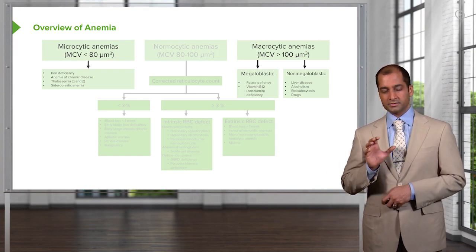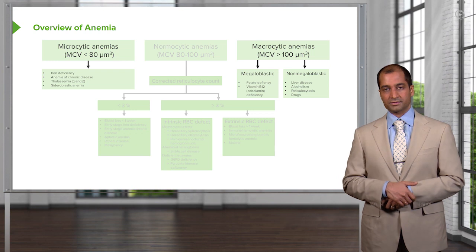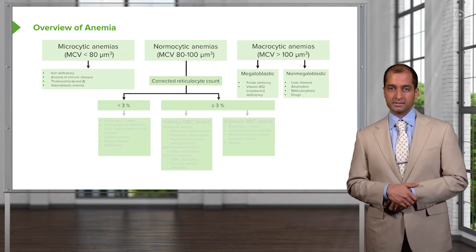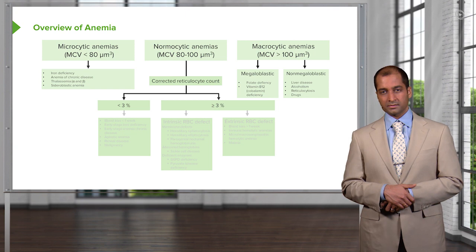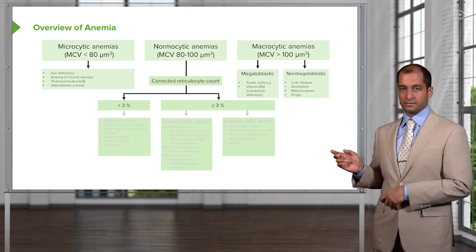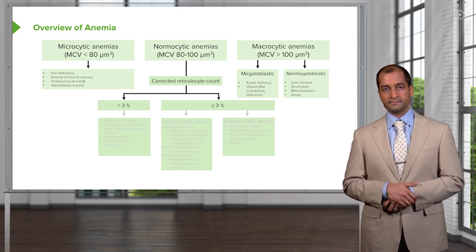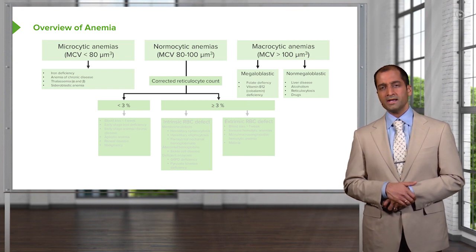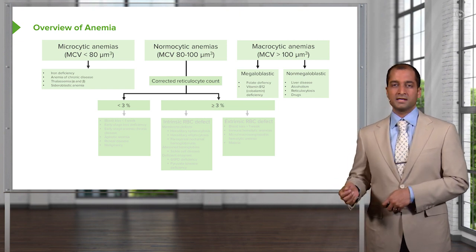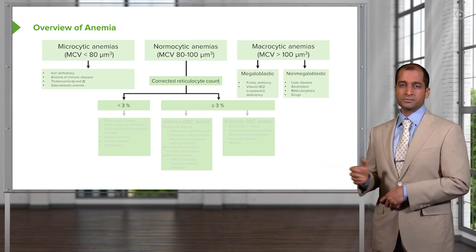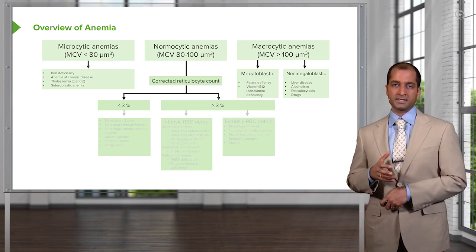All we're doing here is setting up an overview, organizing the arms and branches of anemias. Under normocytic, these are going to be the largest category of all the anemias. Just because you find an MCV between 80 and 100, all it does is place you in the normocytic category — your patient will present with fatigue and tiredness, and then you'll take a proper history to figure it out. Normocytic is divided into non-hemolytic and hemolytic.